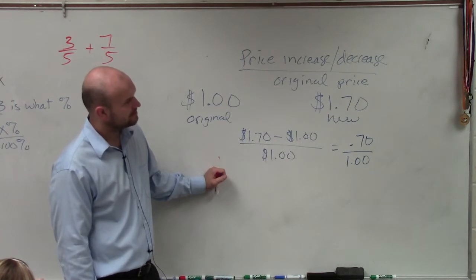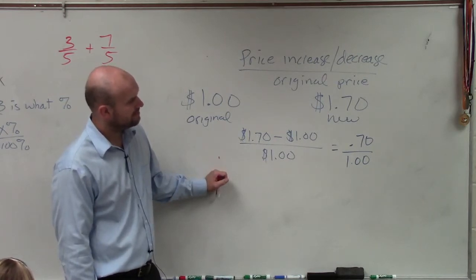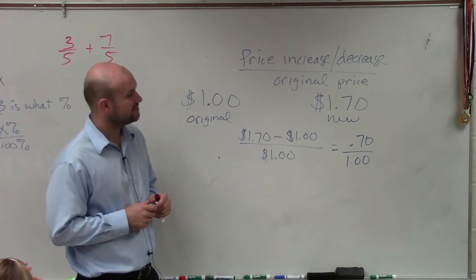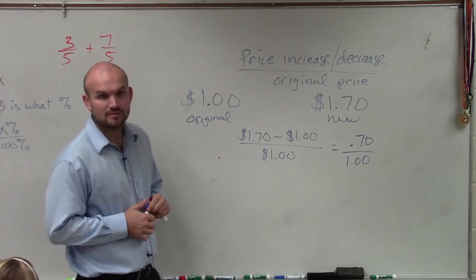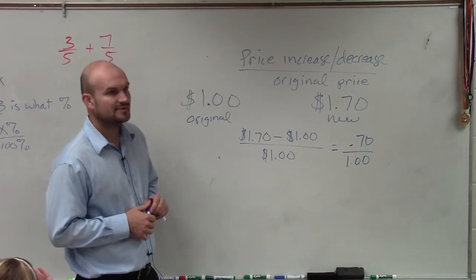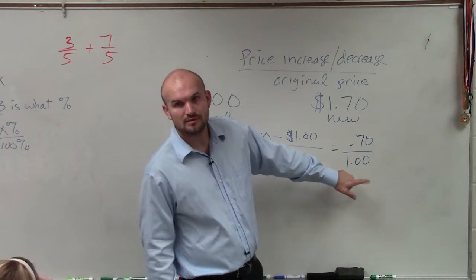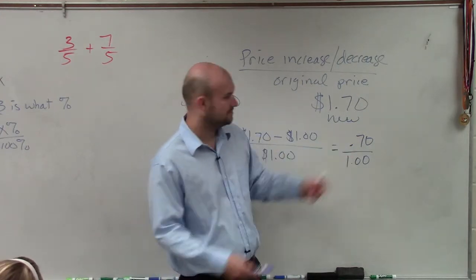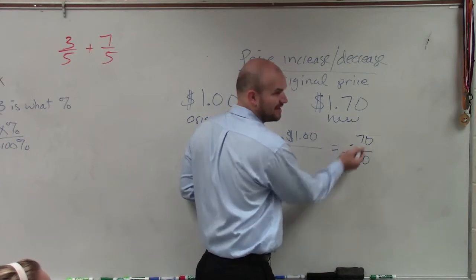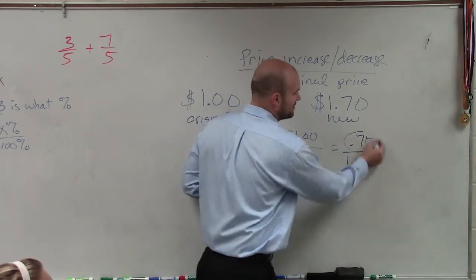You don't have to move the decimal over though, right? It's just 70%. This is just 1, right? So therefore, this is 1.00. So dividing anything by 1 is you get 0.70.